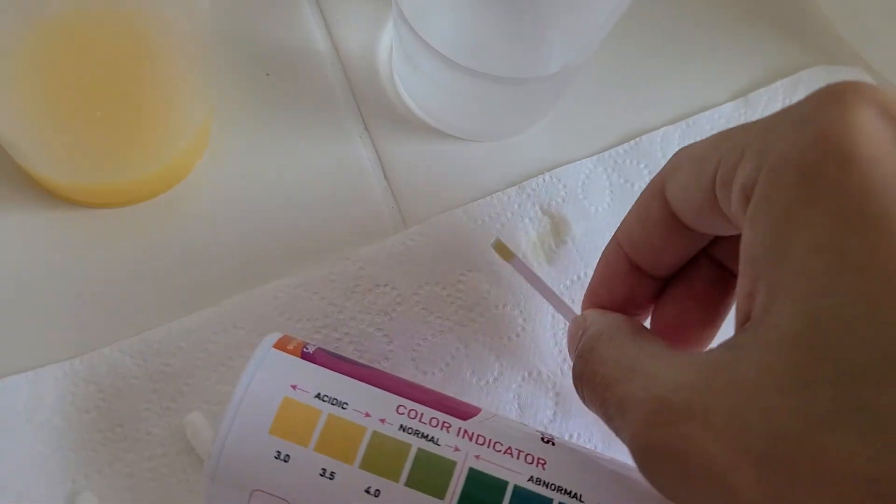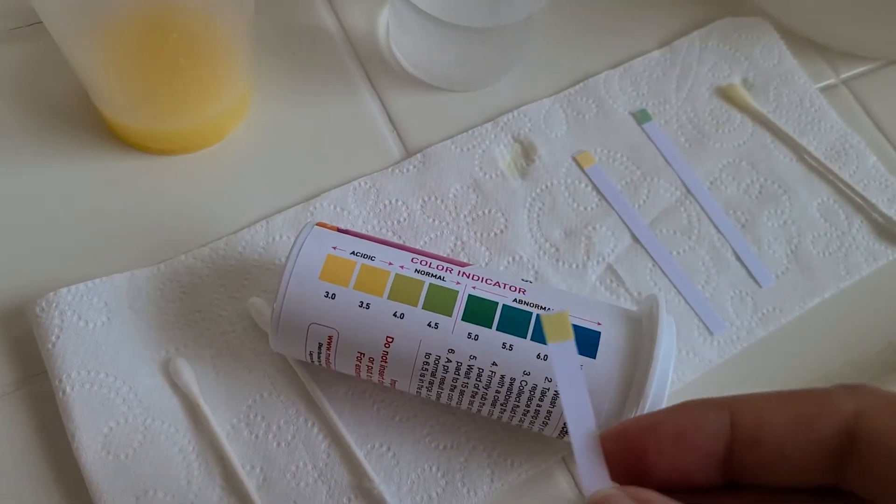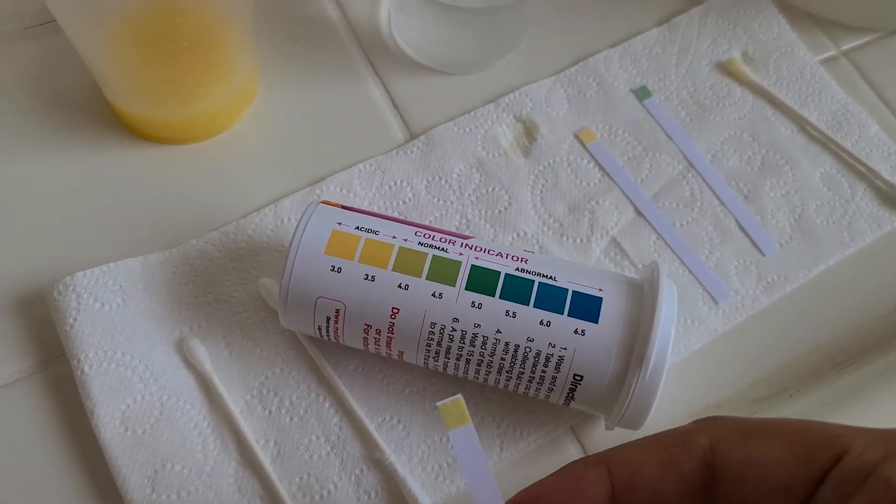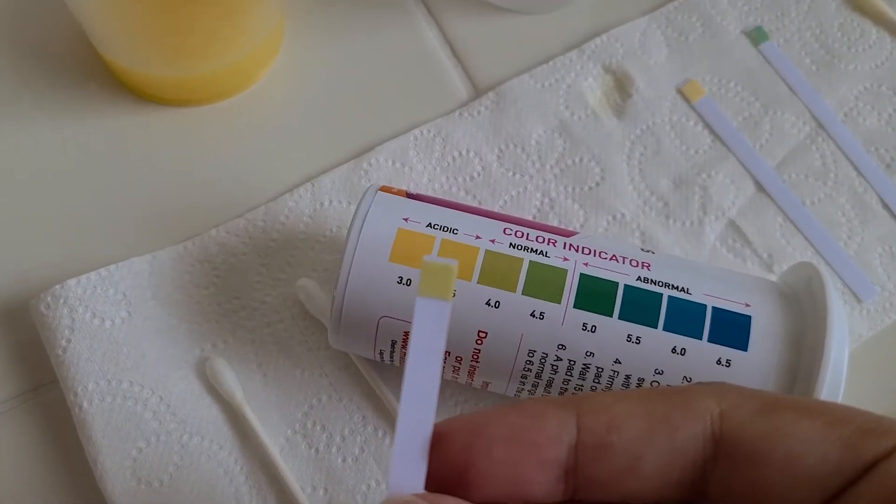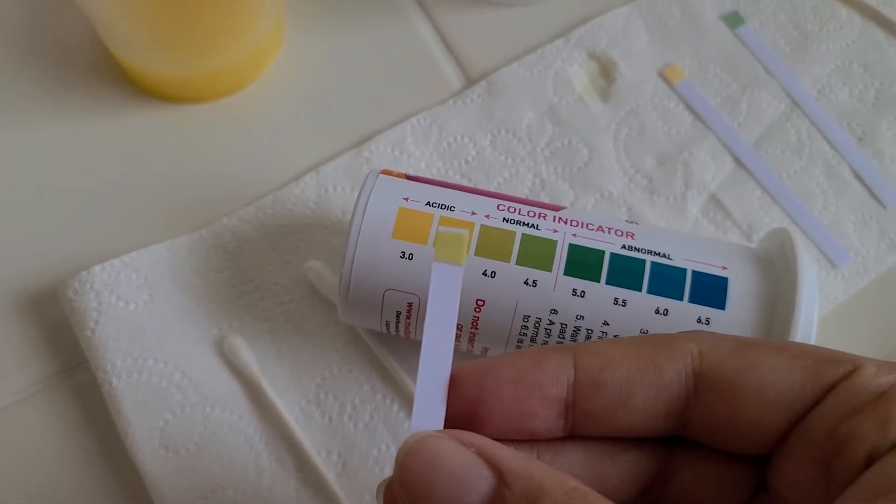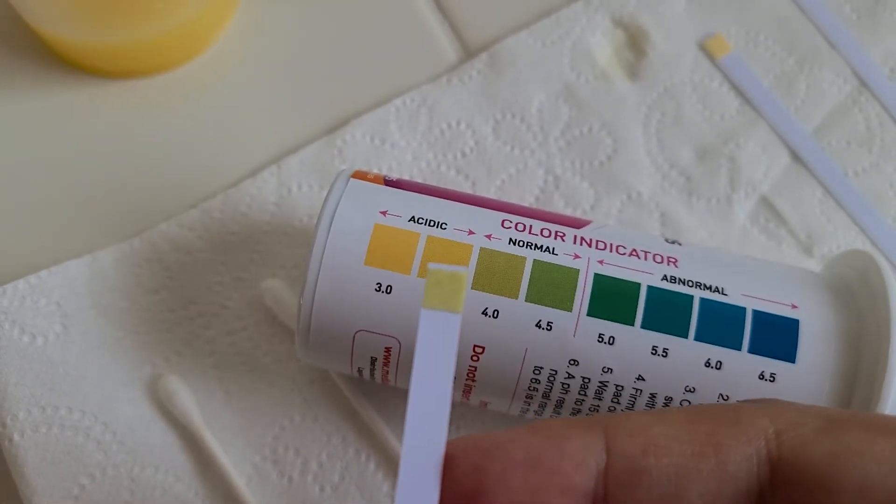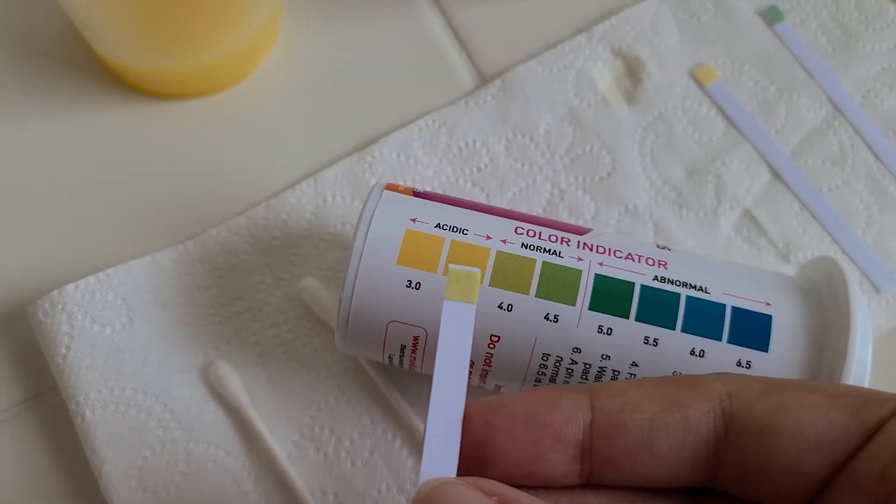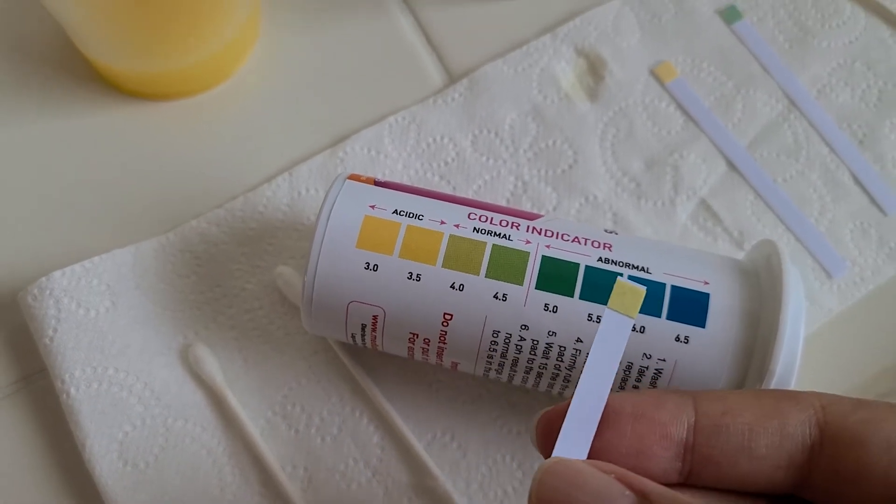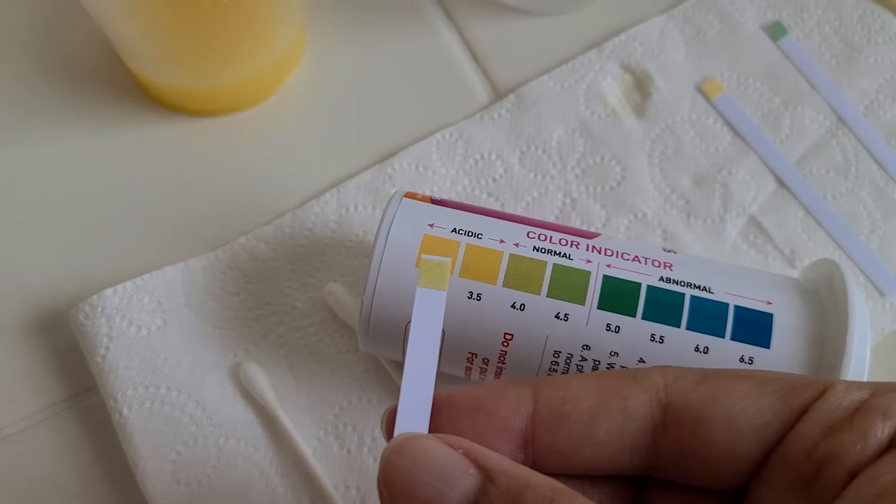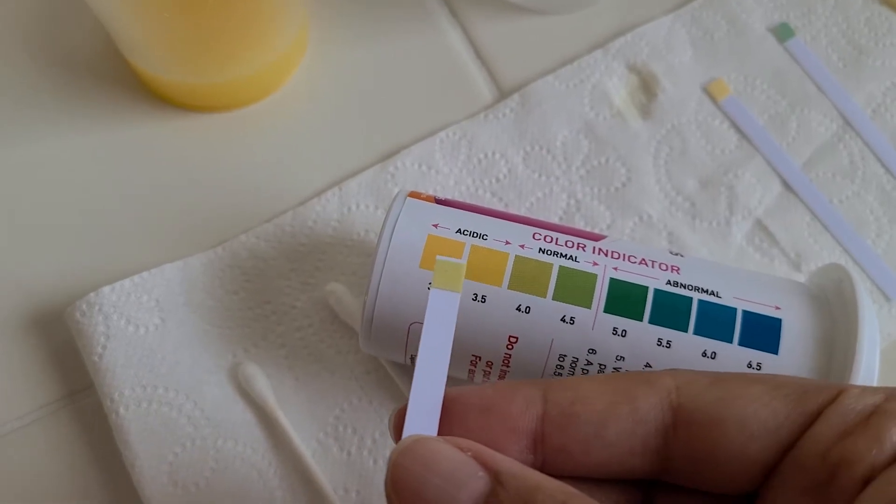And these start to change color pretty quick, even before the 15 seconds. So you can see it's a yellow, yellowish result. And it may not be an exact match but you can see that the color that matches most closely are these yellow colors which are in the acidic range.